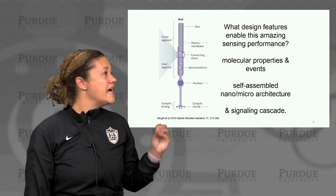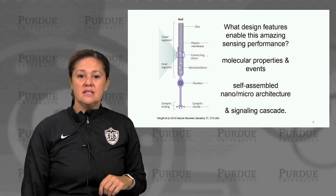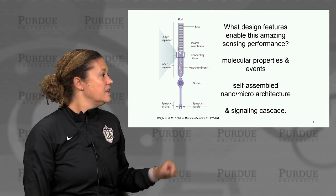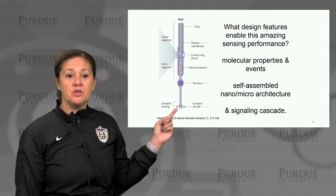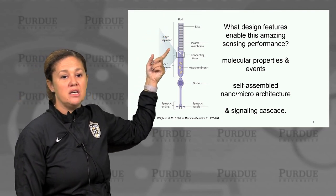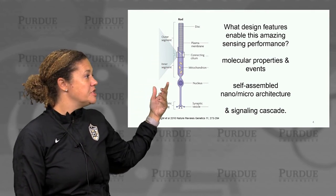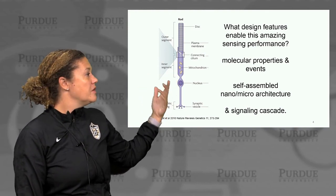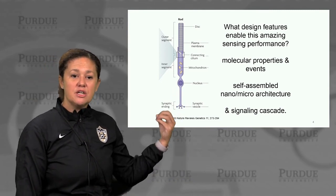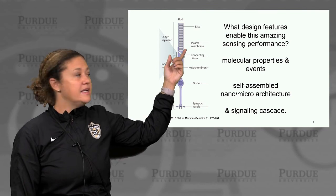What design features enable this amazing sensing performance in the photoreceptor? It involves both molecular properties and events, the self-assembled architecture of the cell, as well as the signaling cascade. Here I have a cartoon of a photoreceptor rod. We can see disks organized in an outer segment of the rod — this is where the photon is absorbed. There's an inner segment where the mitochondria are involved in energy production, the nucleus involved in gene expression, and synaptic endings where neurotransmitter is released to communicate to the rest of the retina and on to the brain.